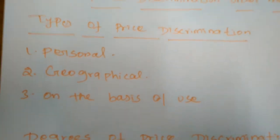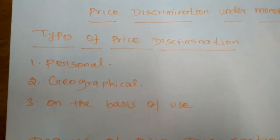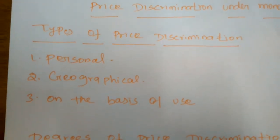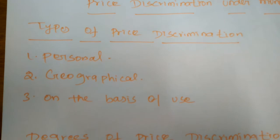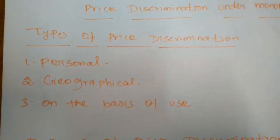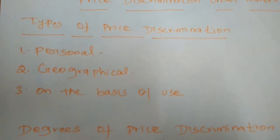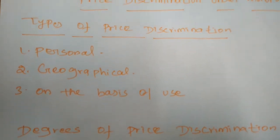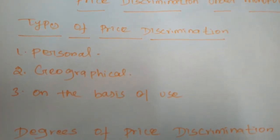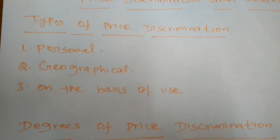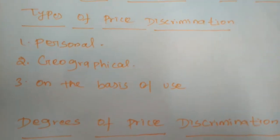On the basis of personally, the monopolist can differentiate prices — different prices are charged for different individual people. For example, the railway gives tickets at a concessional rate to senior citizens for the same journey. Both senior and junior citizens are going on the same journey on the same line, but based on their age the railway department gives concessions to senior citizens.